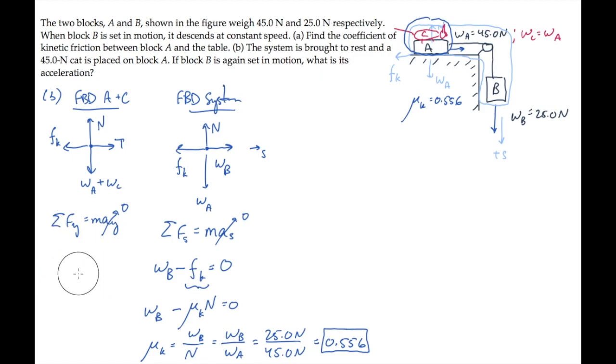In applying Newton's second law, we see that there's still no acceleration in the y direction, so all that changes here is that the normal force on block A now equals the sum of the two weights, block A plus the cat, and that's just twice block A's weight.